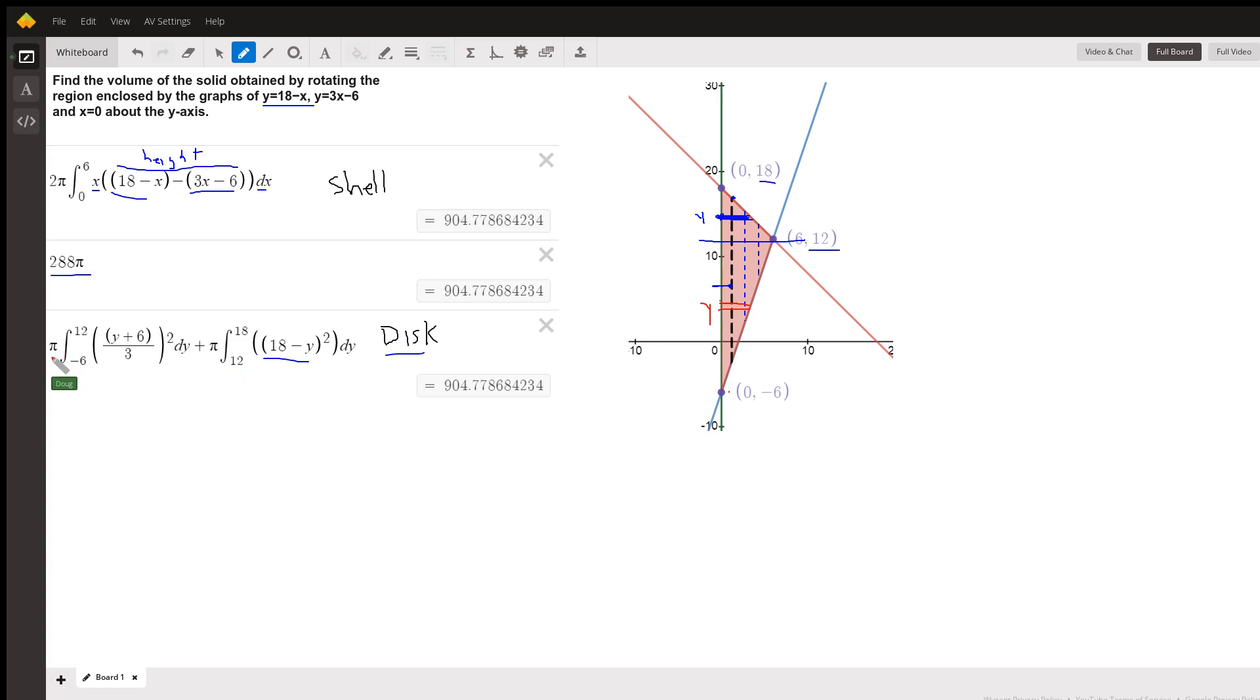So for disk method, it's pi times the outer radius squared minus the inner radius squared. You can see you get the same answer either way. Hopefully, you know how to multiply and simplify all this stuff and find an anti-derivative from 0 to 6 and multiply it by 2 pi. That's what you're doing.